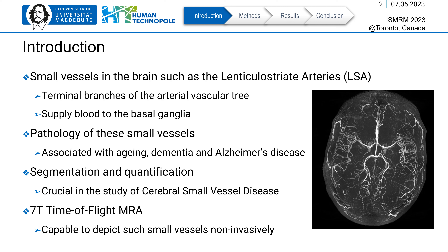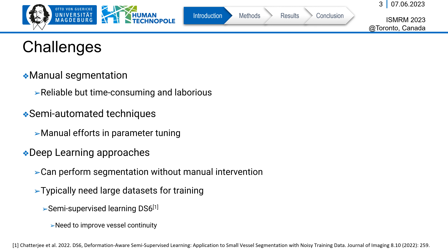The 7 Tesla time-of-flight MRA is capable of depicting such small vessels non-invasively. Manual segmentations of these vessels can be reliable but are time consuming and laborious. Semi-automated techniques require extensive manual parameter tuning. Deep learning approaches can perform segmentation without manual intervention but typically require large datasets for training. Semi-supervised techniques such as DS6 have been seen to perform well with limited training data but require further improvements in terms of vessel continuity.